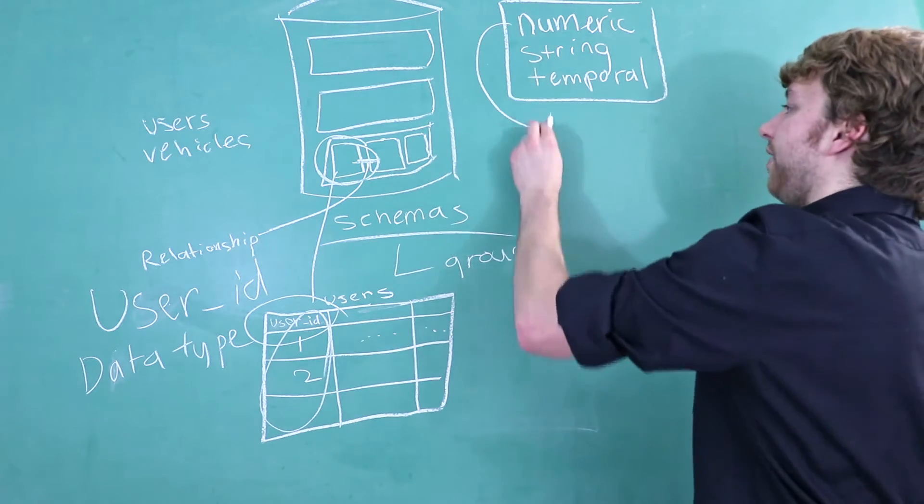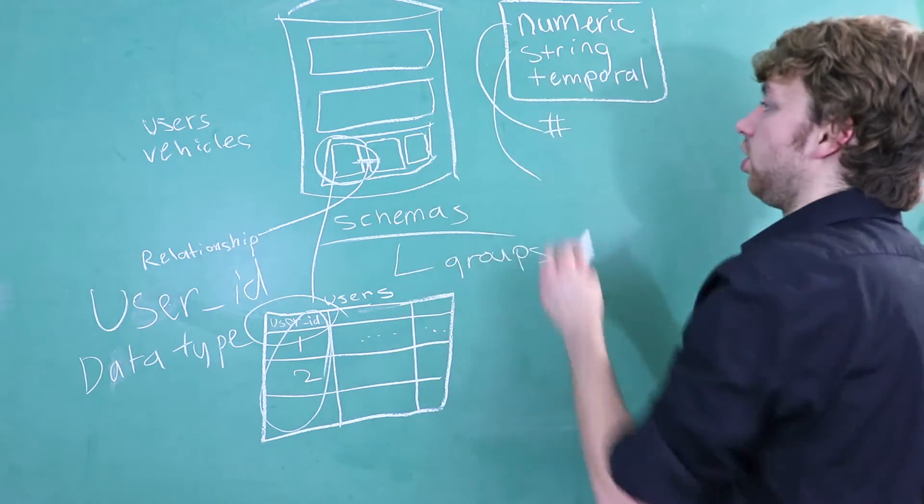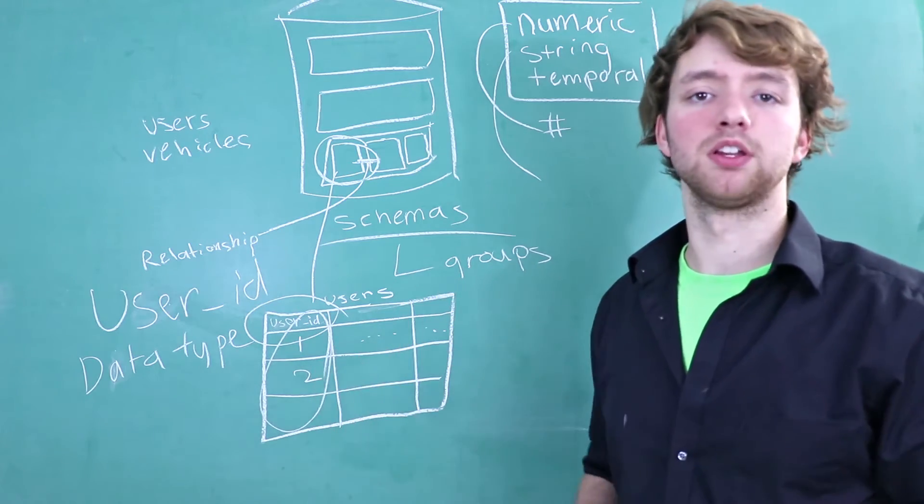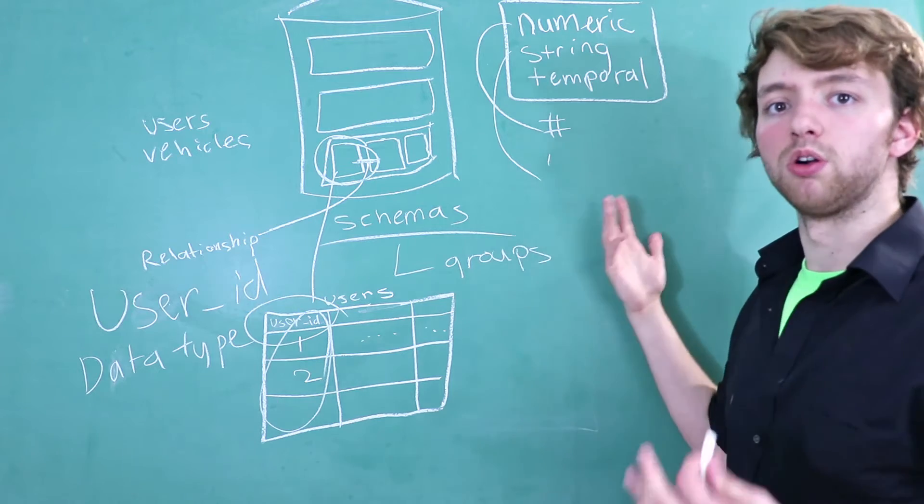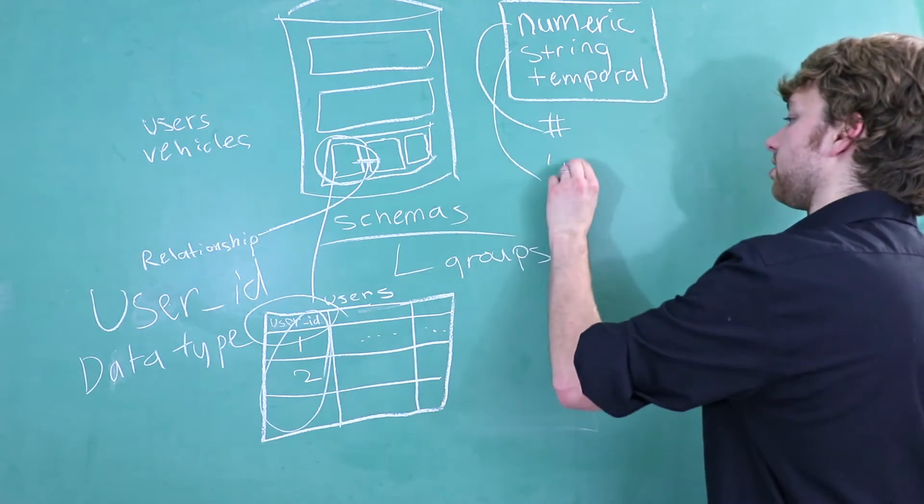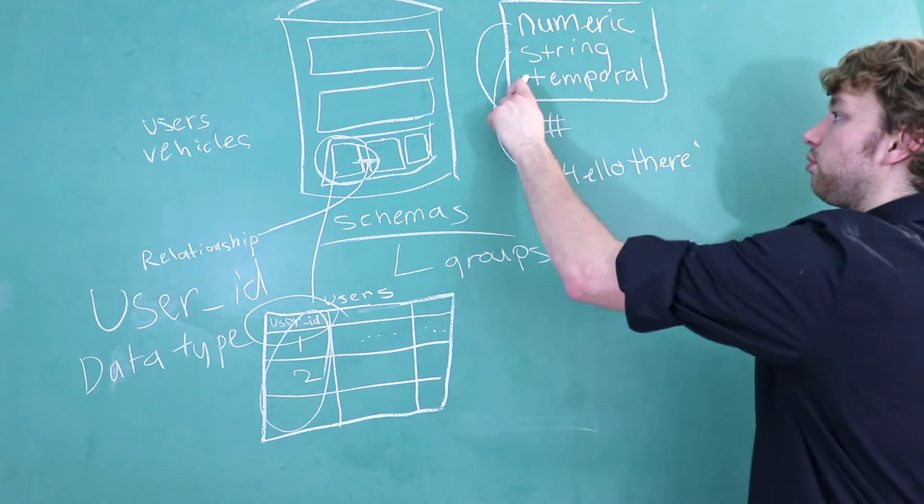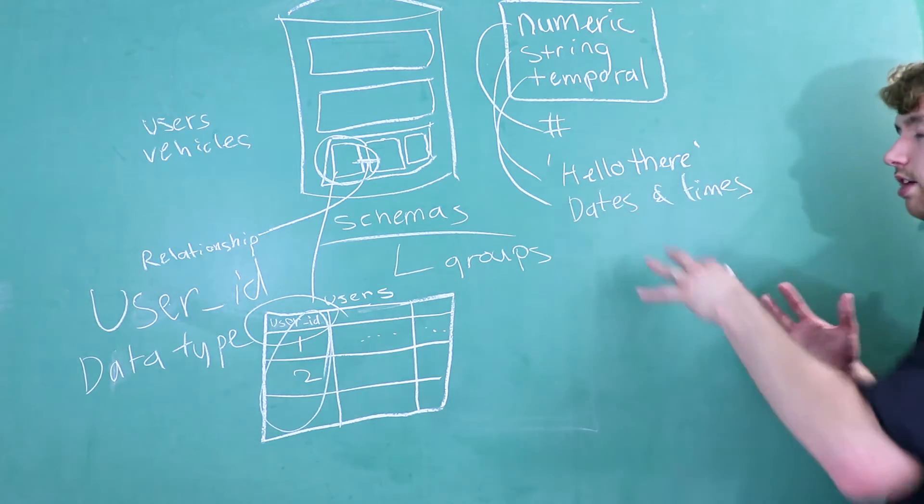So when we talk about numeric, that means anything dealing with numbers. Strings on the other hand are characters, like things you type on the keyboard, spaces, tabs, all that good stuff. And generally you represent these using quotes, either a single quote or a double quote. Generally for databases, we use a single quote, so I could say something like this. This is an example of a string. Temporal, this deals with dates and times.